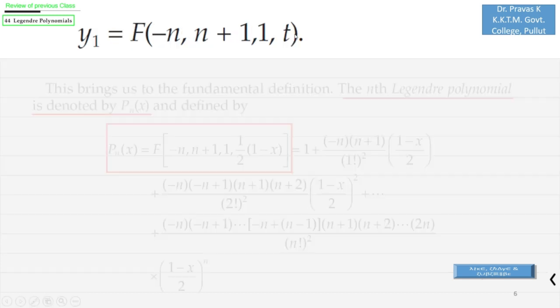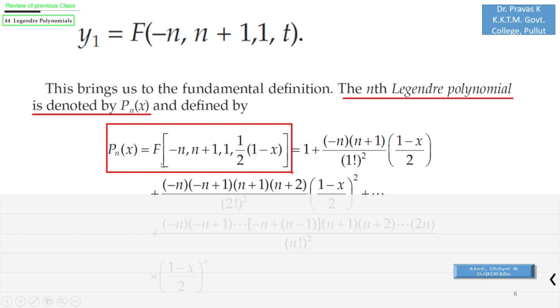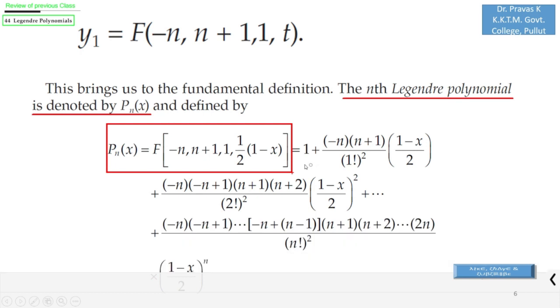Which is denoted by capital F(-n, n+1, 1, t), which we call as the nth Legendre polynomial and we denote it with Pₙ(x). So we have Pₙ(x) = F of this part, where you already know the expansion of F(a,b,c,x), which is 1 + [-n(n+1)/(1!·1)][(1-x)/2] + etc.